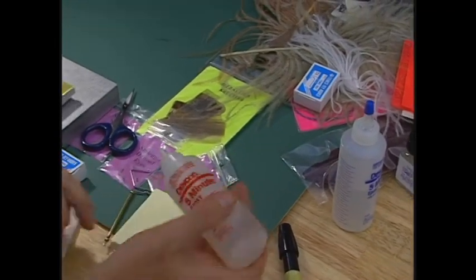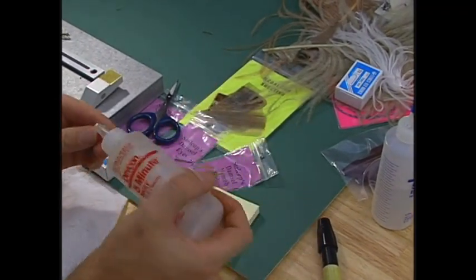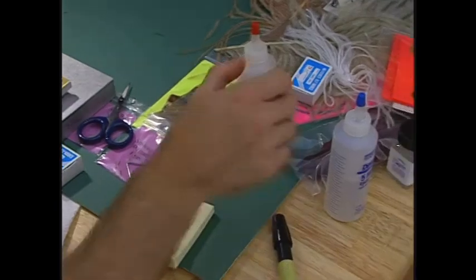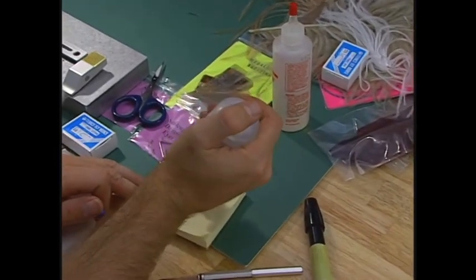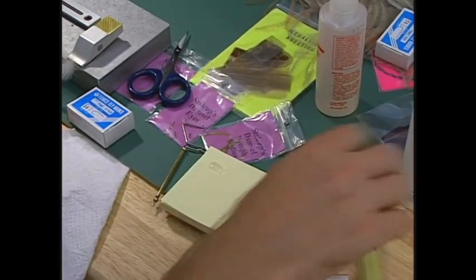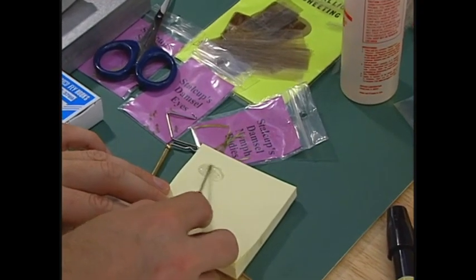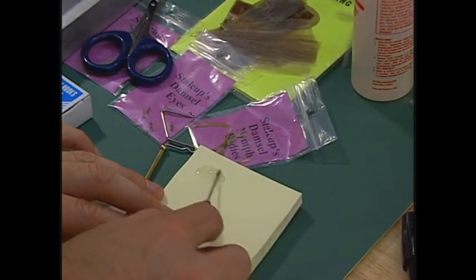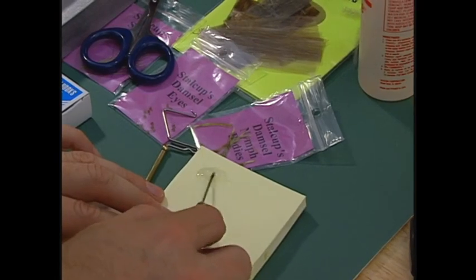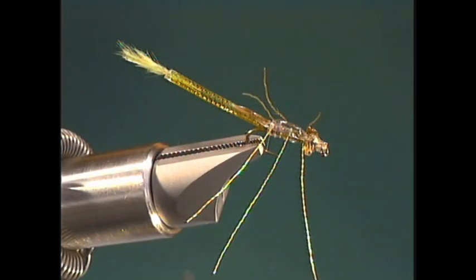For this I use Devcon 5 minute epoxy. I just use stick-it note pads to mix my epoxy on. We'll just take our bodkin and mix it up. We'll make sure it's mixed up nice and good so it hardens just right. After it's set for a minute or two, we're ready to apply it.